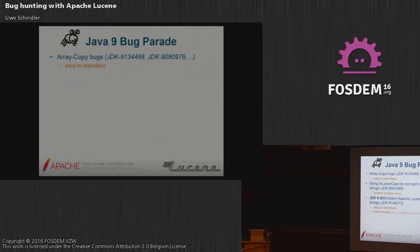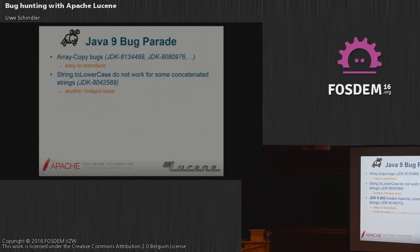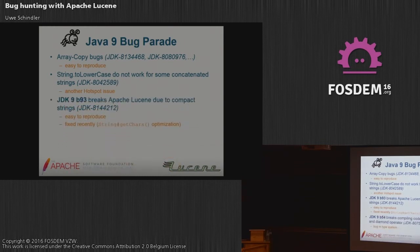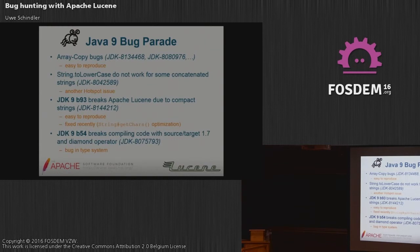There's another ongoing issue since build 93: compact strings fail badly with Lucene at the moment, though a fix was recently made — something like a missing memory barrier causing String.getChars() to fail. We also found that JDK 9 build 54 broke compilation with source and target 1.7 together with the diamond operator — the type system was updated without accounting for old source and target versions.